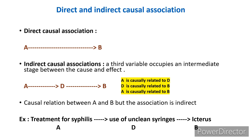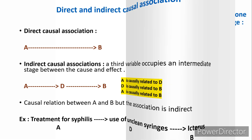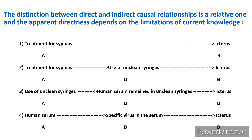Example: treatment of syphilis leads to use of unclean syringes (A and D are causally related), and use of unclean syringes causes icterus (D and B are causally related). Treatment of syphilis and icterus are also causally related, but indirectly due to the intermediate variable of unclean syringes. Initially it was thought treatment of syphilis directly caused icterus, but then they realized it was the use of unclean syringes causing icterus — so treatment of syphilis became an indirect cause, while use of unclean syringes became the direct causal factor for icterus.